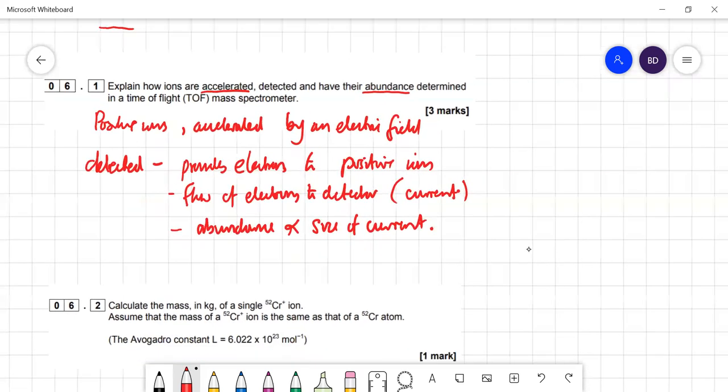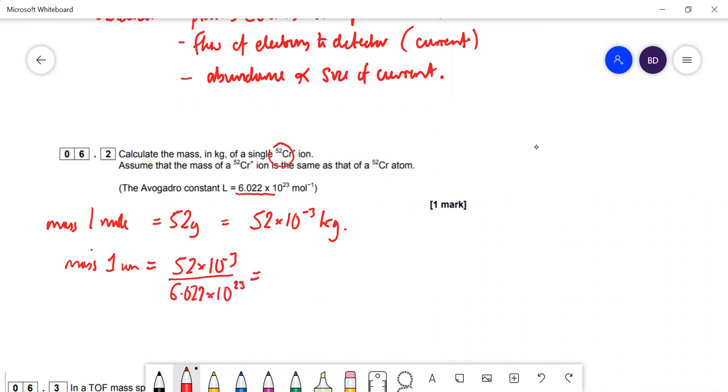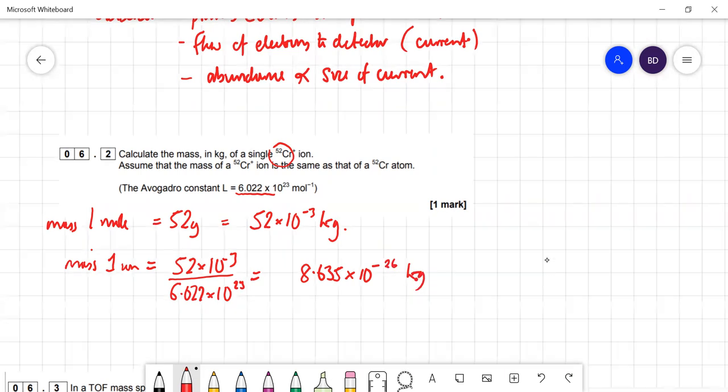Calculate the mass in kilograms of a single chromium-52 ion. One mole has mass 52 grams, which is 52 times 10^-3 kg. Mass of one ion equals that divided by Avogadro's number: 8.635 times 10^-26 kg.